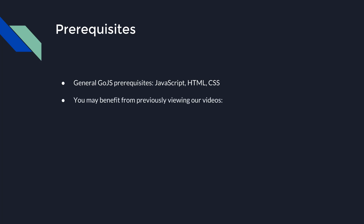You will benefit from previously viewing Building Parts with GoJS: Parts and Panels, which delivers an explanation of parts, panels, and graph objects. You will also benefit from viewing our video, The GoJS Diagram Model, which covers how simple data is stored to be visualized later by the diagram. Basic familiarity with these topics is assumed for this video.